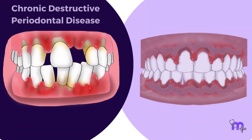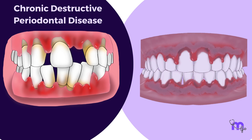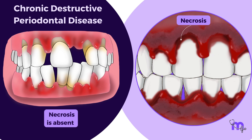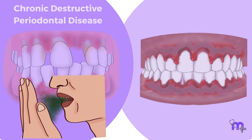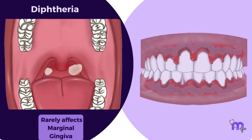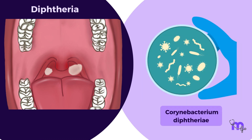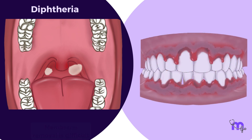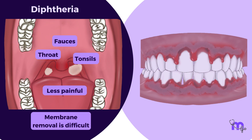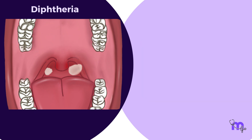Chronic destructive periodontal disease is painless if uncomplicated. Necrosis of the papillae is absent. Though not as strikingly fetid as in ANUG, some odour may be present. Fourth, diphtheria rarely affects the marginal gingiva. Bacterial smears reveal Corynebacterium diphtheriae. Membrane removal is difficult. Lesions are less painful. The throat, phosis, and tonsils may be affected.